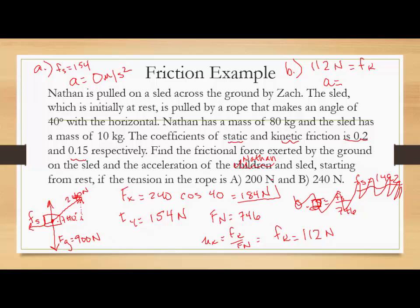And our acceleration, our x force is 184 and our frictional force is 112. So to find our net, we're just going to subtract those two. We get 72.1 for our net force. And our mass is 90, so 72.1 divided by 90 gives us an acceleration of 0.8 meters per second squared.